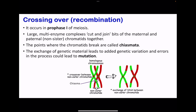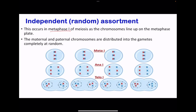Moving on to crossing over: as we said, this occurs in prophase I. Here, enzyme complexes cut and join bits of maternal and paternal chromatids — the non-sister chromatids. They are cut at a region called the chiasma, and we see these combinations due to crossing over. The points where this happens are called the chiasmata, and this exchange of genetic material leads to variation. Sometimes errors occur, which result in mutation. Independent or random assortment occurs in metaphase I of meiosis. As chromosomes line up at the metaphase plate, they are randomly distributed and various combinations can occur. For example, we can have one blue and two reds on one side, while on the other side we have two blues — but various arrangements are possible, leading to different combinations in offspring.